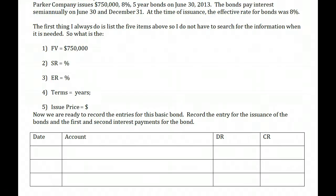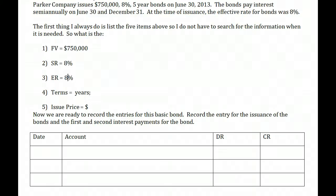The stated rate is the embedded rate on the bond — in this problem, it is 8%. The effective rate, the market rate at the time of issuance, was also 8%. That's not usual, but it does happen occasionally.